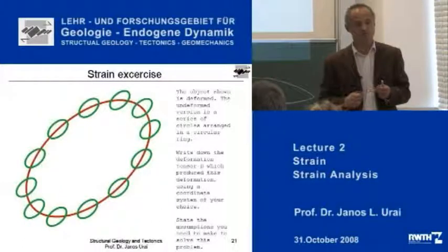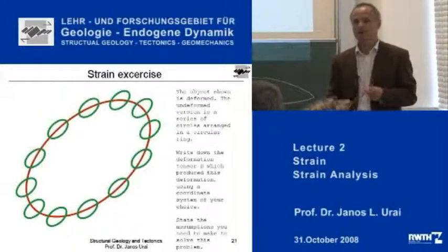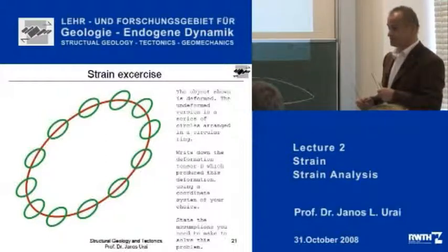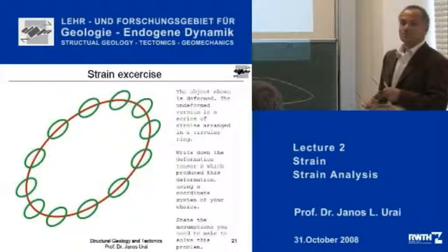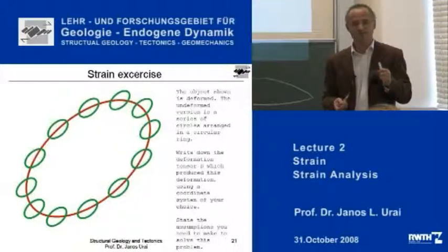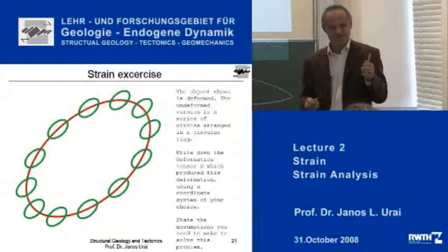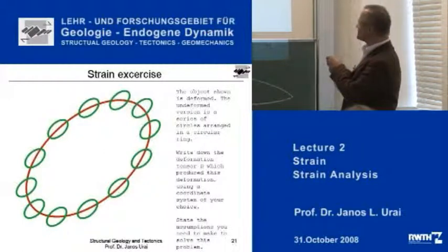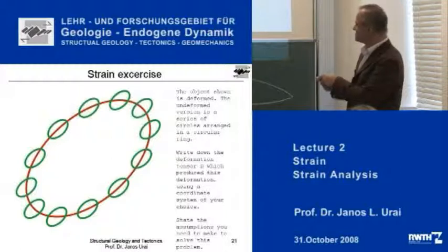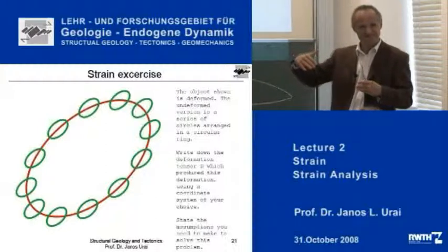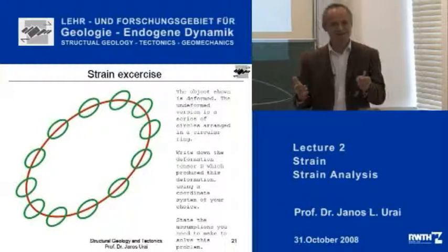So that you can solve this problem, I can imagine this could become one of the exam questions. One of the main tricks — and many people make this mistake — is you have to choose your coordinate system right. A smart student chooses the coordinate system so that it coincides with the long axis of the ellipse and the short axis, because then your matrix becomes rather simple.